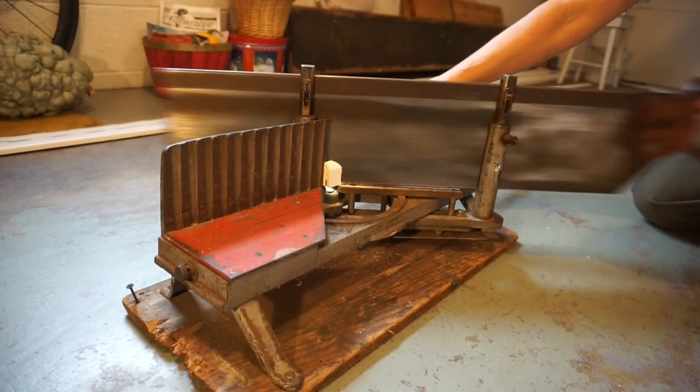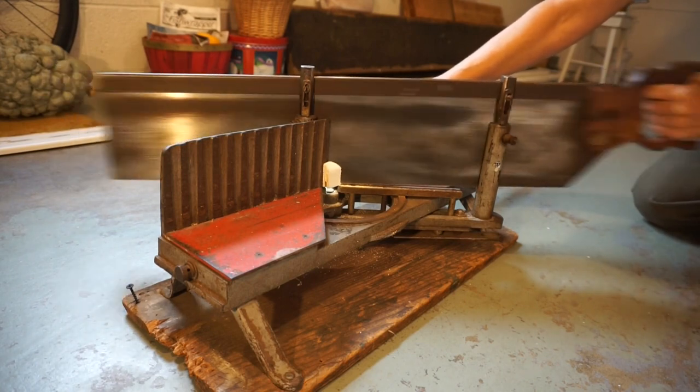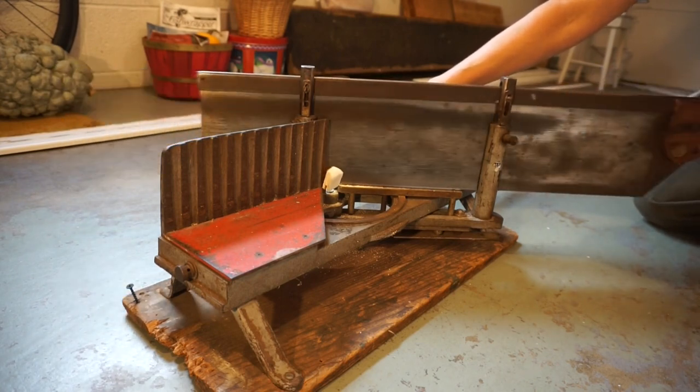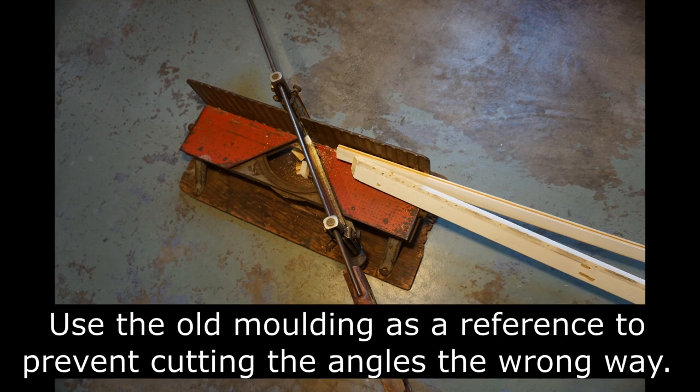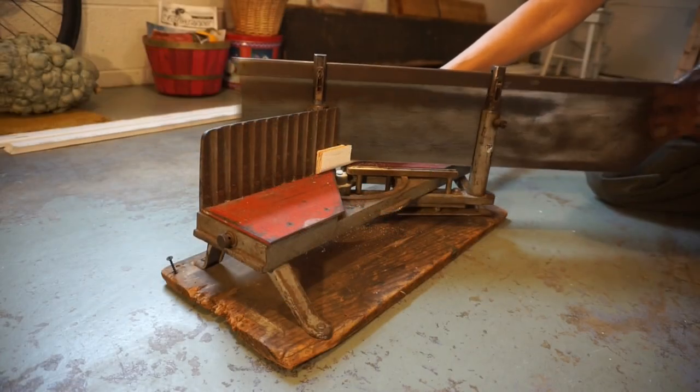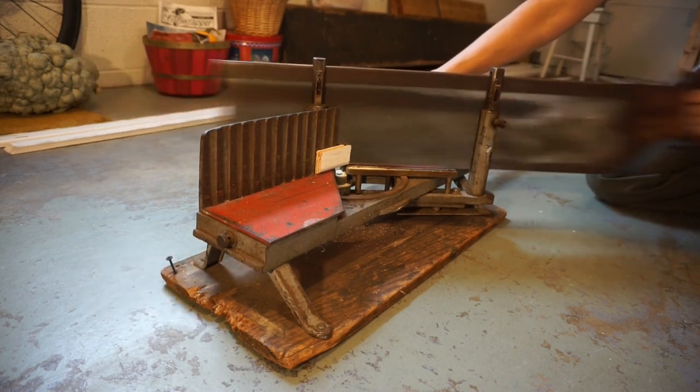If using a miter saw, cut a 45 degree angle on one end of the new top piece. Then use the method shown earlier to transfer the size of the old top molding to the new one. Then cut the 45 degree angle on the other side of the new piece.